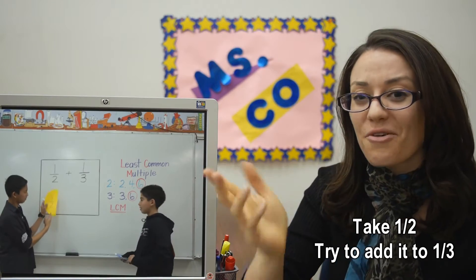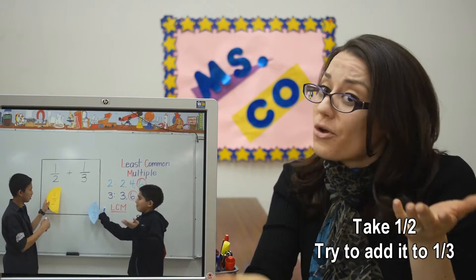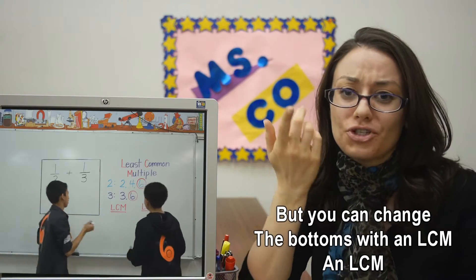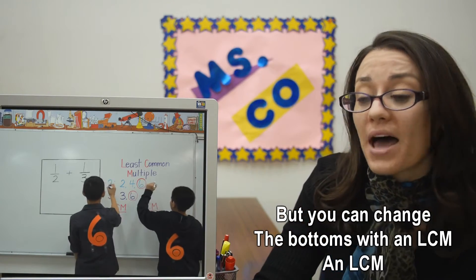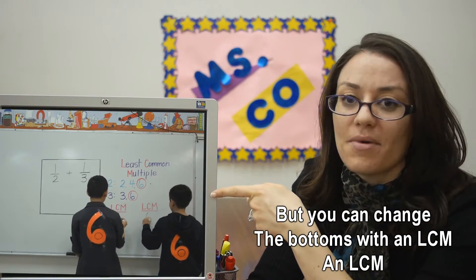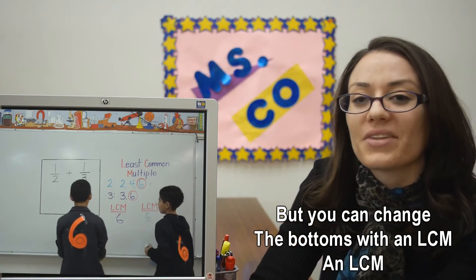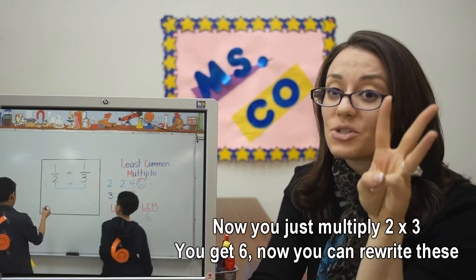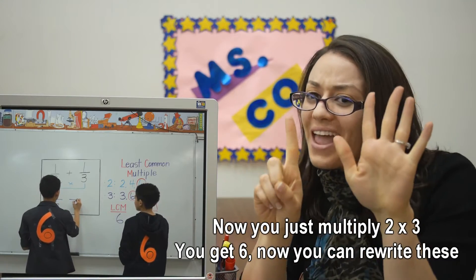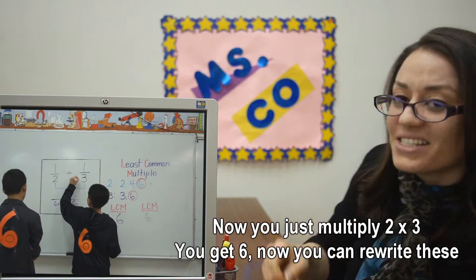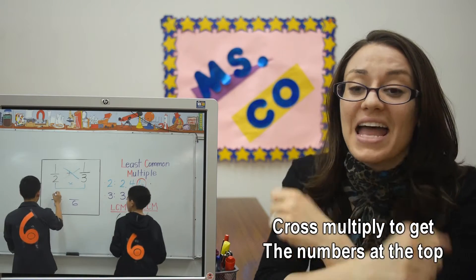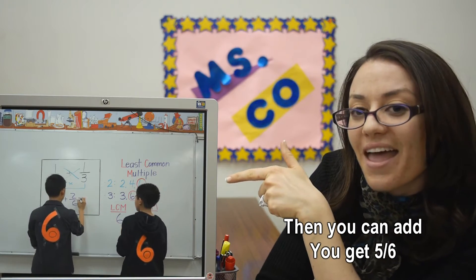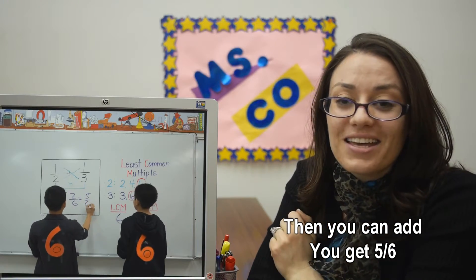Take one half, try to add it to one third, but you can't add different sizes, that's absurd. But you can change the bottoms with an LCM, an LCM. Now you just multiply two times three, you get six, now you can rewrite these. Cross multiply to get the numbers at the top, then you can add, you get five sixths.